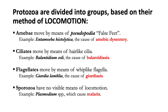Protozoa are sometimes classified taxonomically by their mode of locomotion: some move by pseudopodia, others by flagella, others by cilia, and some are non-motile. The groups are: Amoebae, which move by pseudopodia — example, Entamoeba histolytica, which causes amoebic dysentery; Ciliates, which move by hair-like cilia — example, Balantidium coli, which causes balantidiasis; Flagellates, which move by whip-like flagella — example, Giardia lamblia, causing giardiasis; and Sporozoa, which have no visible means of locomotion — example, Plasmodium species, which cause malaria.